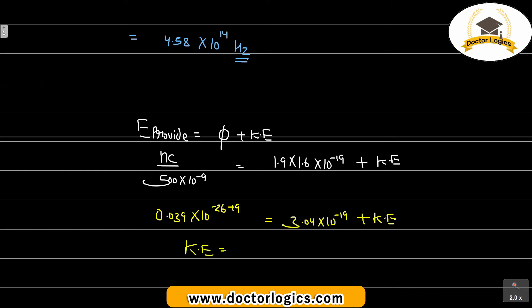So kinetic energy on solving: this will be 26 minus 9 equals minus 17. So 3.9 into 10 is to the power minus 19 minus 3.04 into 10 is to the power minus 19.